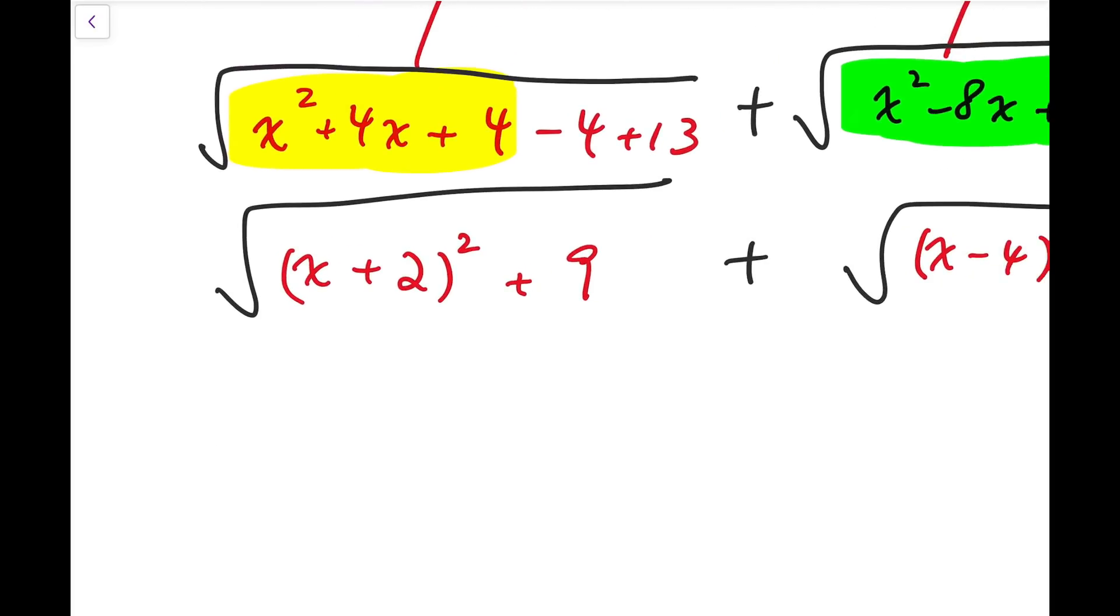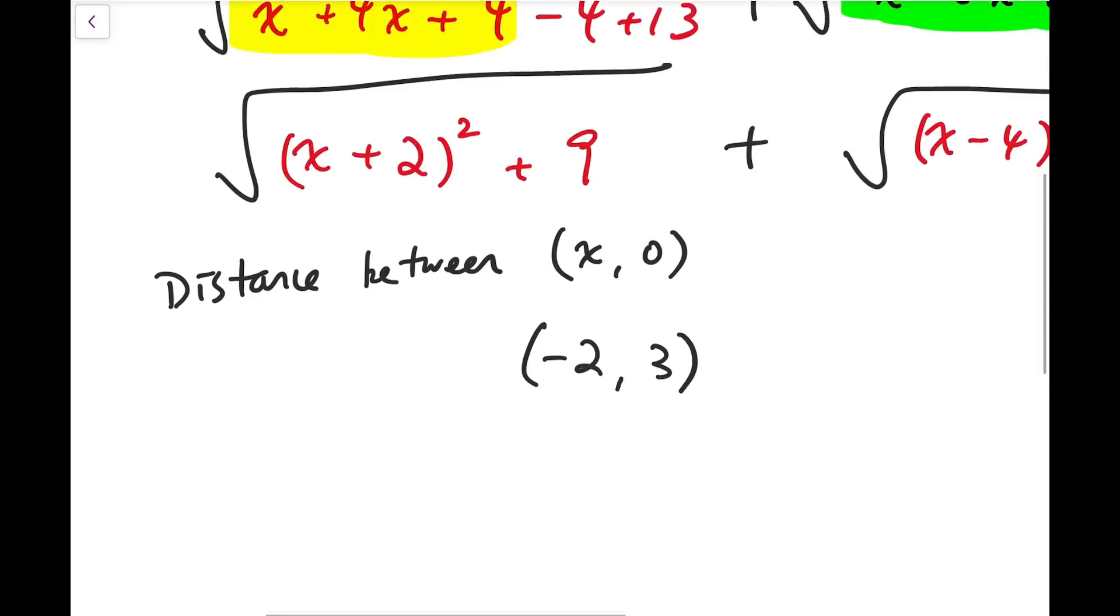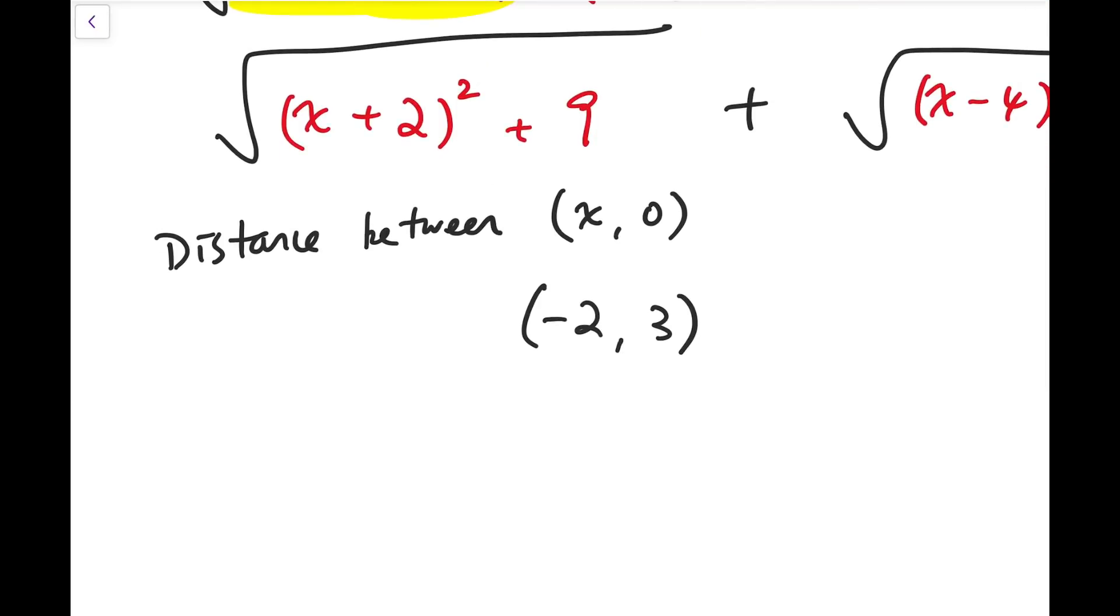So I can interpret this as the distance between some point, say x 0, and then it's minus 2, and then 3. So because 9 is also 3 squared, so then with sum of squares and the square root of it, so it's easy to think about distance formula.